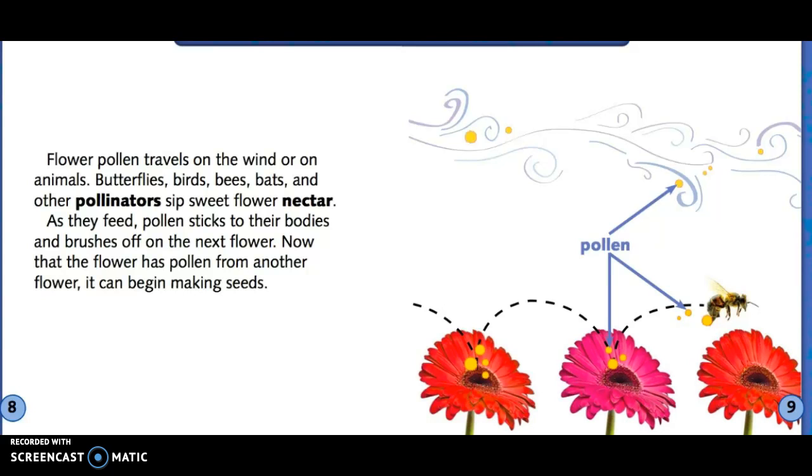This part of the book is going to teach us about pollen and pollinators. Flower pollen travels on the wind or on animals. Butterflies, birds, bees, bats, and other pollinators sip sweet flower nectar.